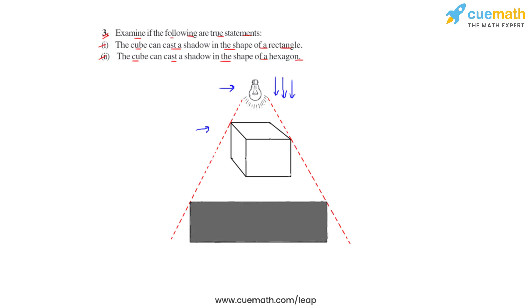So let us see what happens when we cast the shadow of this cube. As we can see here when we have considered the shadow of the cube, we see that the shape of the shadow represents the shadow of a rectangle and not a hexagon.